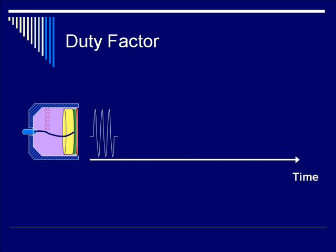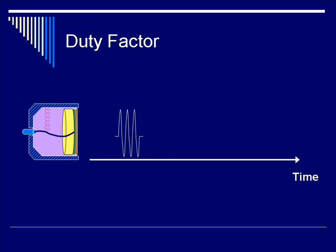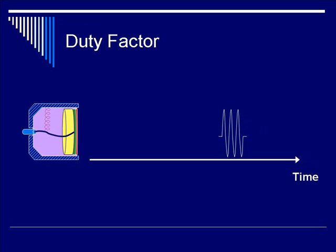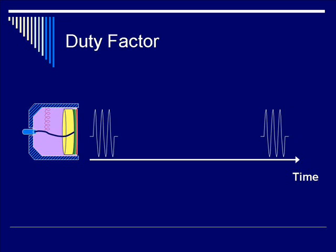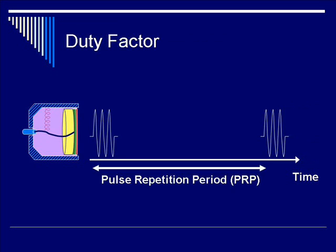You have a transducer giving off a pulse that travels a predetermined distance within the body tissue. A second pulse won't be given off until all the echoes have been detected from the initial pulse. This pulse has a pulse duration (PD), which determines the ultimate axial resolution of the ultrasound image. As this pulse propagates deeper into soft tissue and hits the depth of interest, and all echoes have been retrieved, a second pulse will be given off. This time period between transmissions is called the pulse repetition period, or PRP.